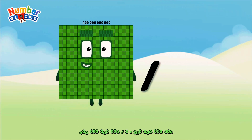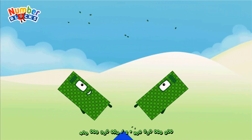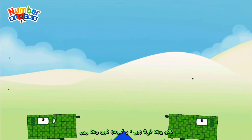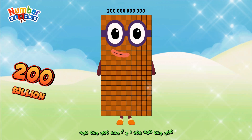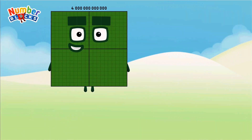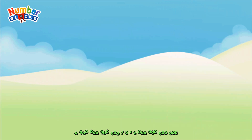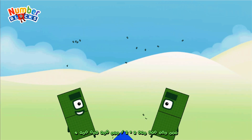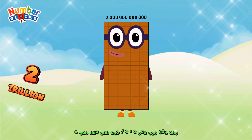Four hundred billion divided by 2 equals 200,000,000,000. Four trillion divided by 2 equals 200,000,000,000.